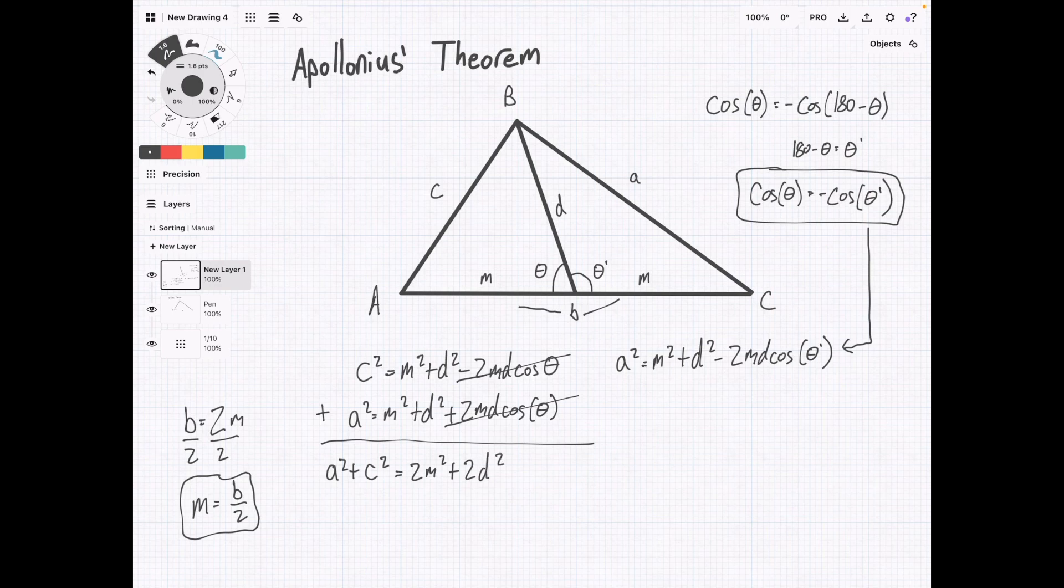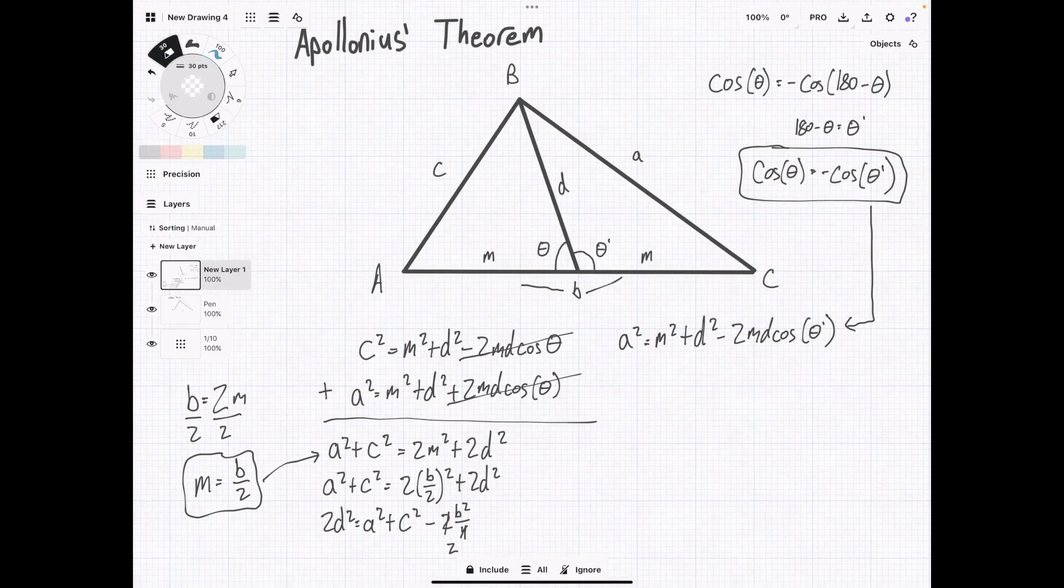Now we can plug in m. So we're going to have a squared plus c squared equals 2 times b over 2 squared plus 2d squared. And remember, we're trying to get down to figure out what the length of d is. That's our median. So we're going to actually bring that to get it on one side. We're going to have 2d squared equals a squared plus c squared minus, and we're going to do a couple steps here all at once, 2b squared over 4. Just cancel this over 2.